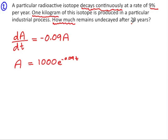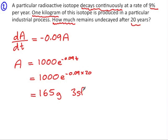After 20 years, that means substituting in a value of 20 for t, which to the nearest gram is 165 grams. That's to three significant figures.